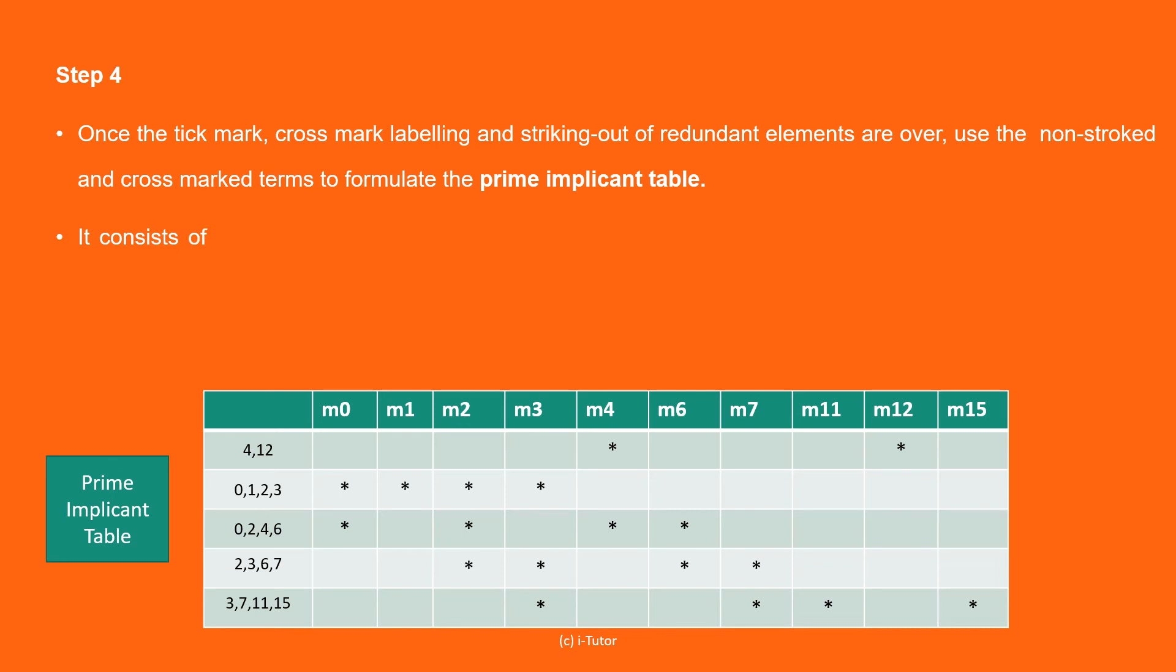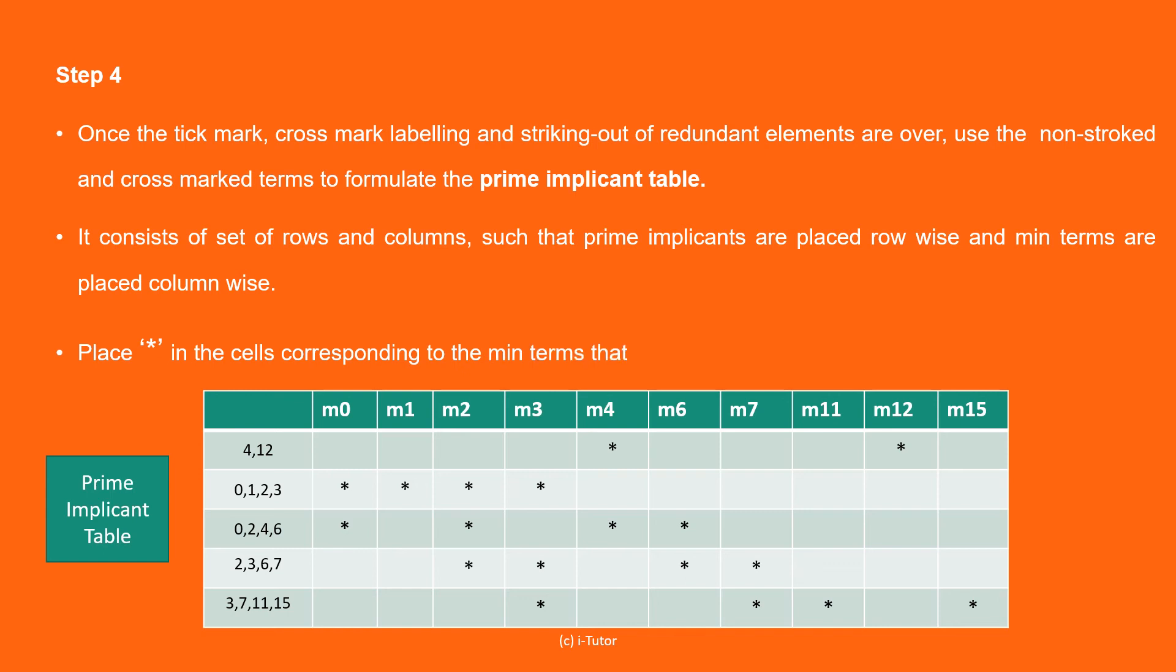It consists of set of rows and columns, such that prime implicants are placed row-wise and minterms are placed column-wise. Place asterisk in the cells corresponding to the minterms that are covered in each prime implicant.